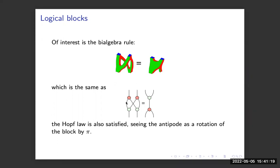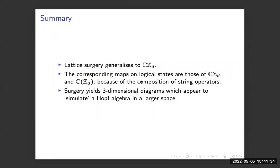Applying the antipode — two Hadamards in a row — we do indeed get the Hopf law mentioned at the start. So the short summary is: we can straightforwardly start with a qudit lattice model, perform lattice surgery, and show all the linear maps work as expected. The maps on the logical states are exactly those of the group algebra and its dual function algebra, because of how the string operators compose. The surgery diagrams appear to be a simulation of a Hopf algebra on the logical space.